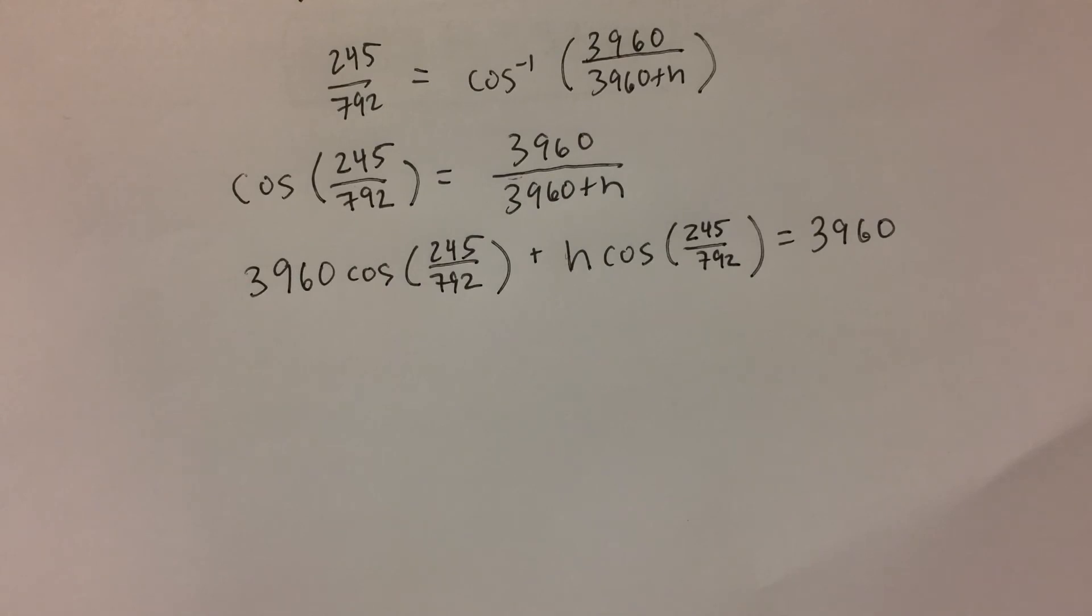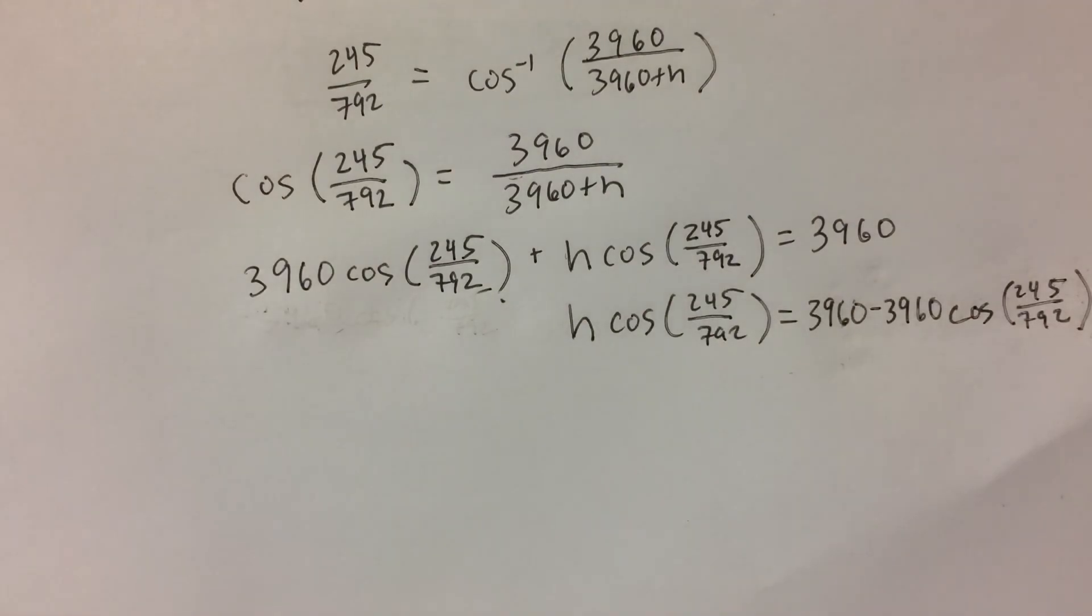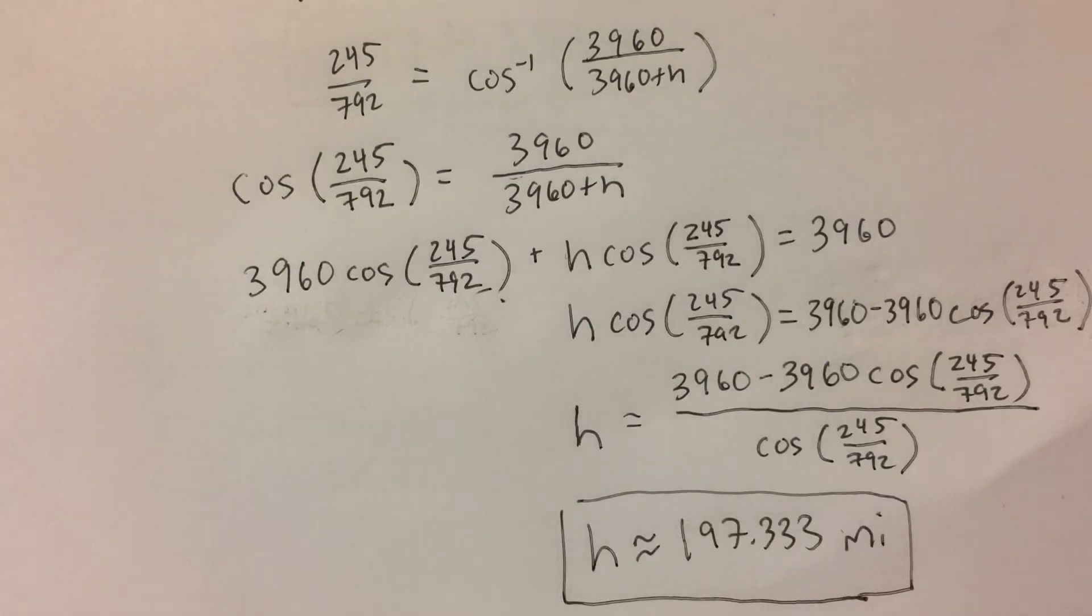Next, we need to subtract the constant 3,960 times cosine of 245 divided by 792 from both sides. So, we are left with the term h cosine 245 over 792 by itself on the left-hand side. Finally, we will divide both sides by cosine of 245 divided by 792. This expression can be inputted into the calculator to get an estimate for the height of the satellite. This results in approximately 197 miles.